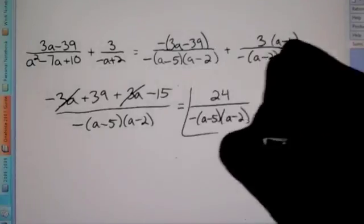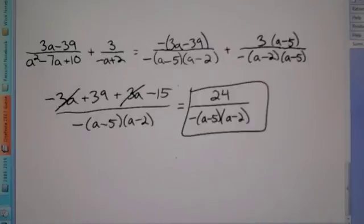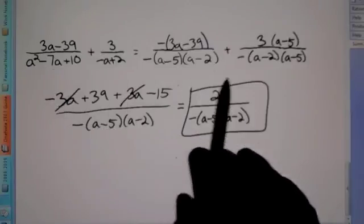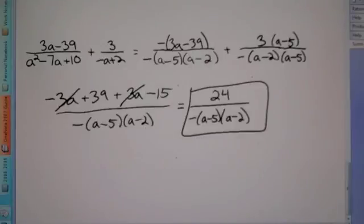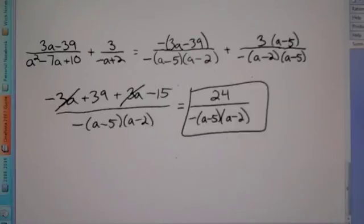That would be your answer because we can't factor anything further and there's nothing we can reduce. So that's how we do it: break the denominator into two parentheses, see what each side is missing to get a common denominator, then combine the numerators. That is how you add and subtract rational expressions. Good luck with that.